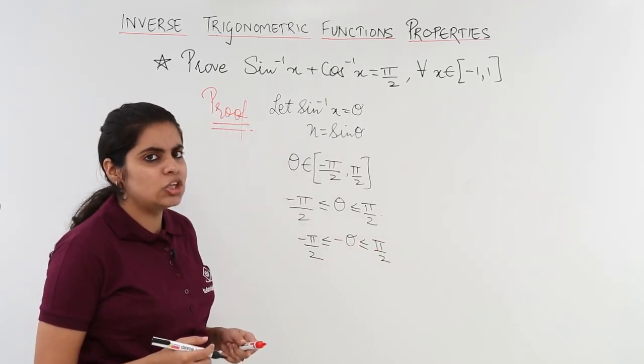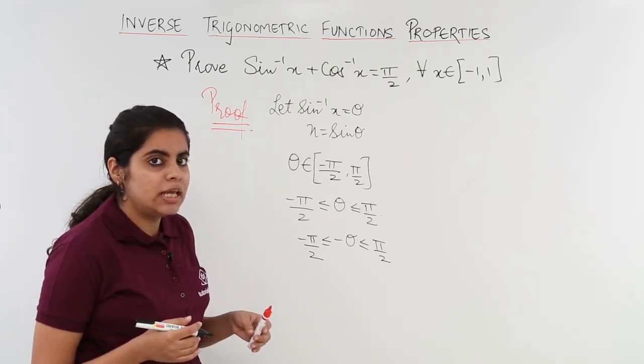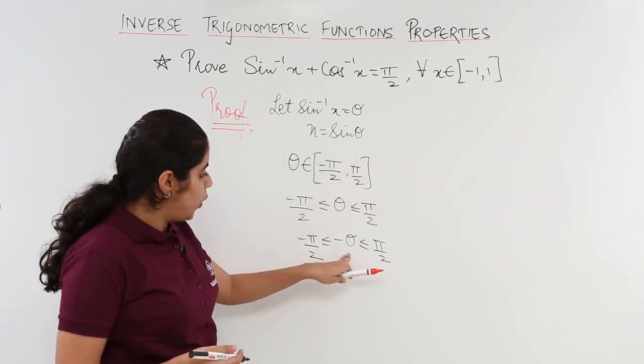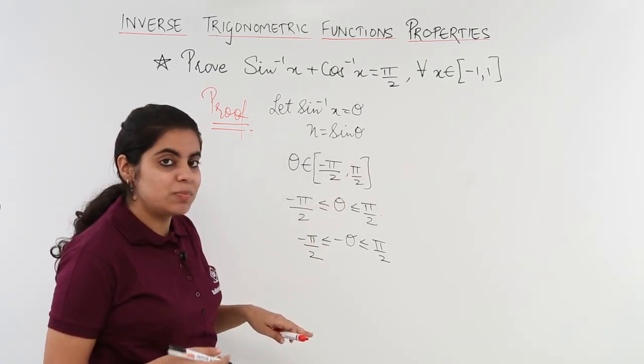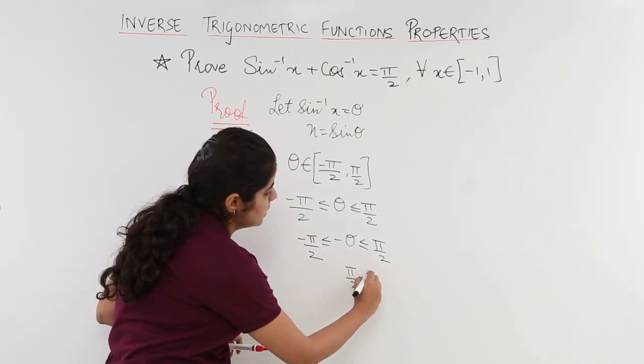What is the next thing? I need to add pi by 2. Why am I doing everything will be clear after one or two steps. So what is my next step? My next step is to add pi by 2 so it becomes pi by 2 minus theta.